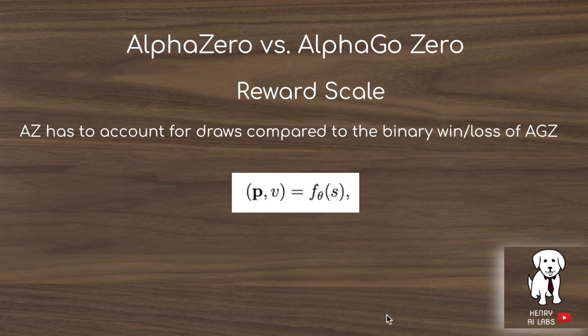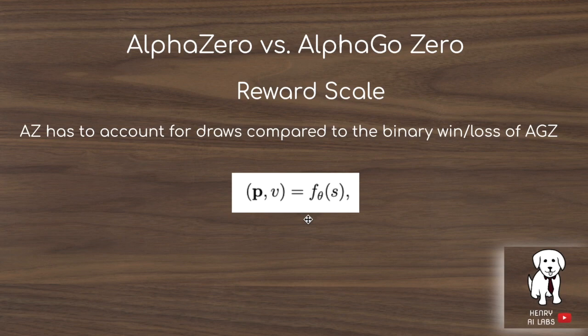The first change from AlphaGoZero to AlphaZero is accounting for the reward scale. AlphaZero has to account for draws as well as binary wins or losses. In Go, the game always ends in win or loss, making the reward scale simpler since it's always plus one or minus one. But in chess and shogi, you have a more complicated label distribution with win, loss, and draw.